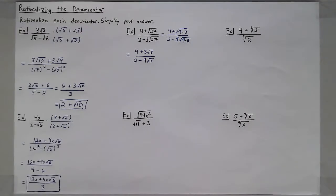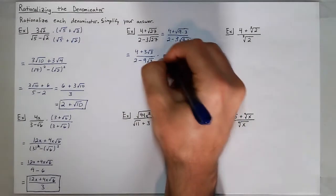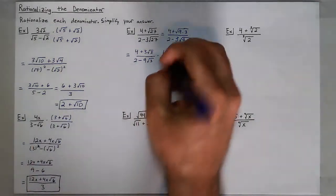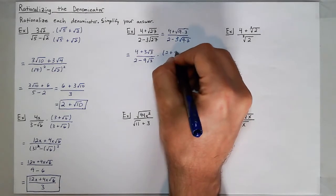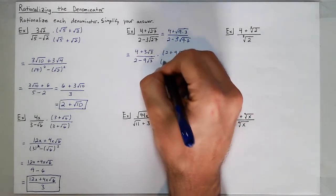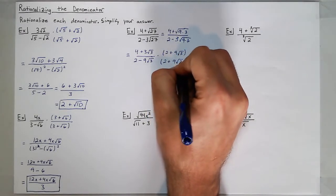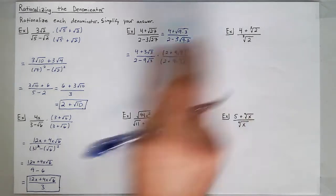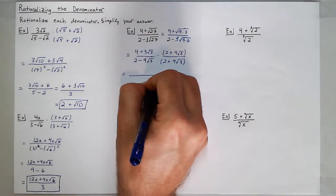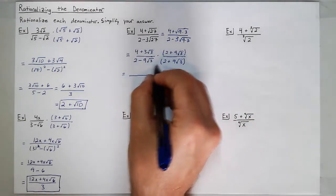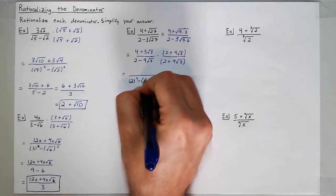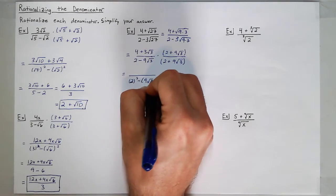When I go to simplify, I'll multiply my numerator and denominator by the conjugate of my denominator, which is 2 plus 9 square roots of 3. Since I'm multiplying conjugates in the denominator, that becomes 2 squared minus the quantity 9 square roots of 3, squared.